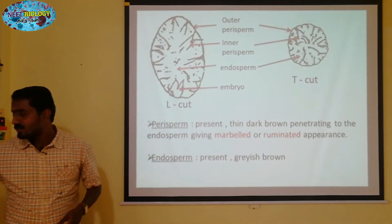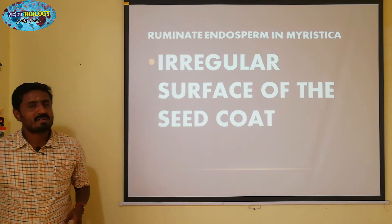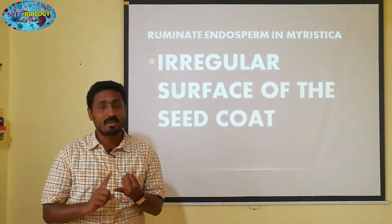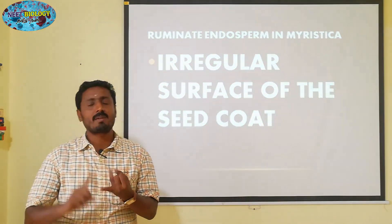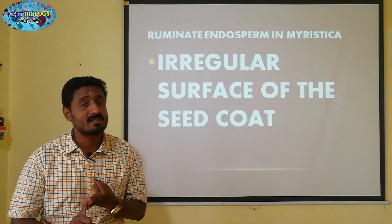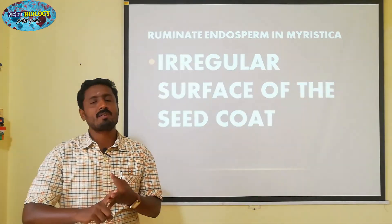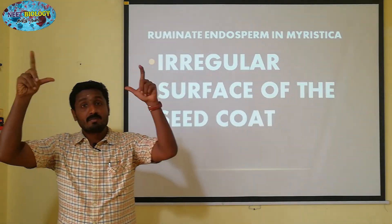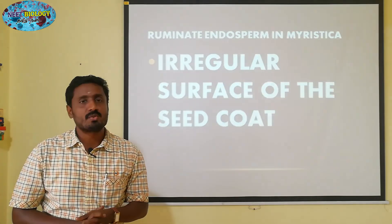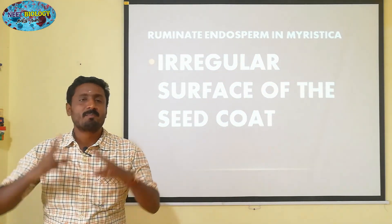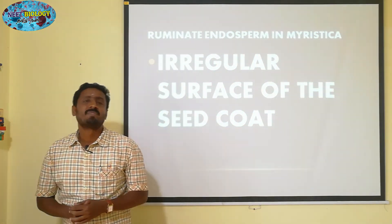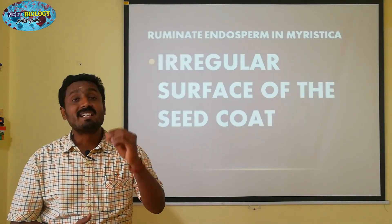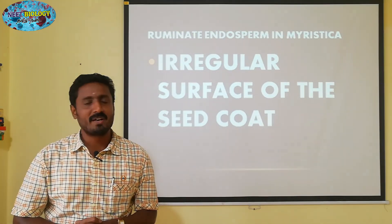This is the third example. The first one is Passiflora. The second one is Annonaceae and Aristolochia. The third one is Myristica. Together these are the definition, reason, and examples for Ruminate Endosperm.